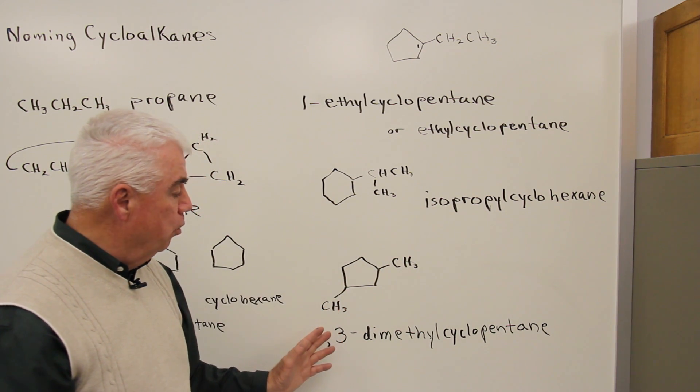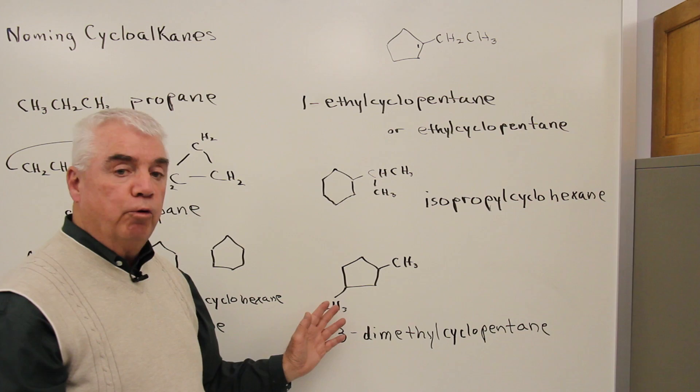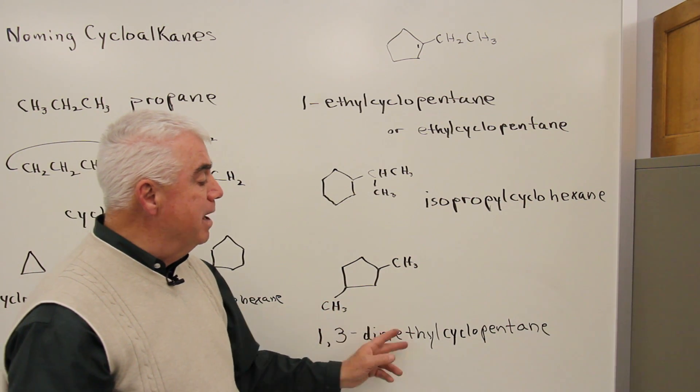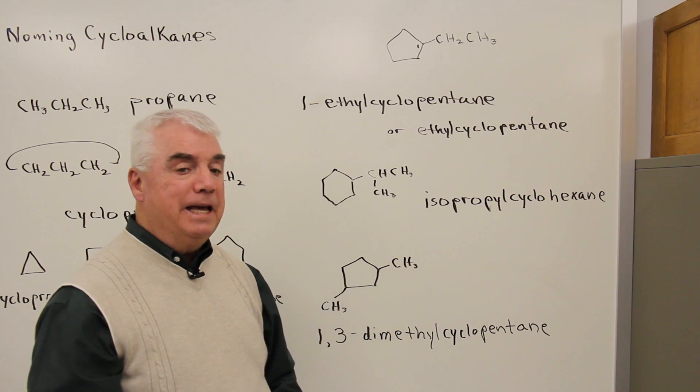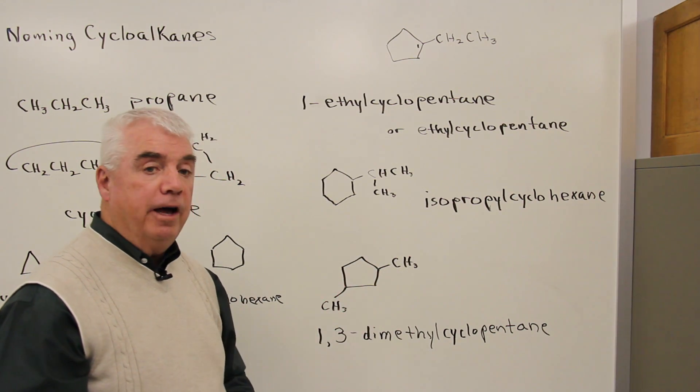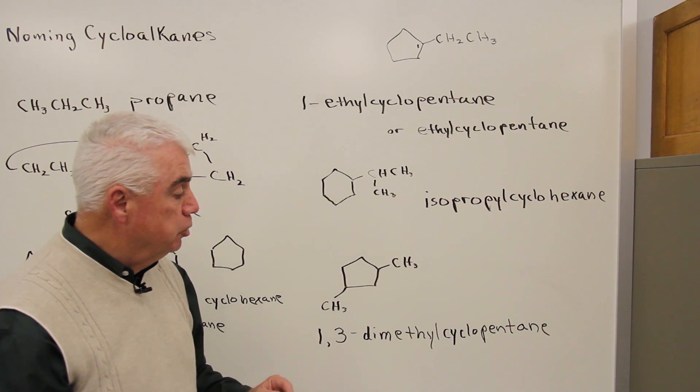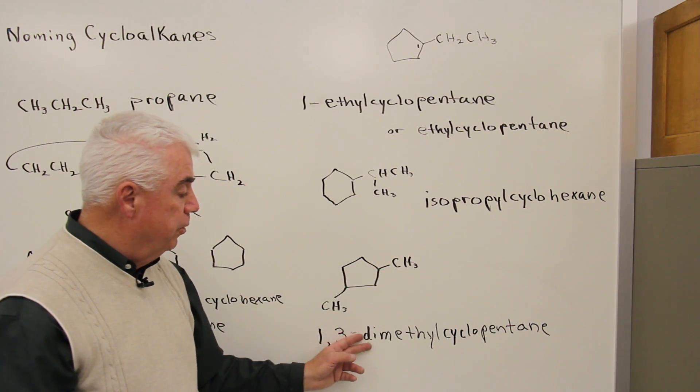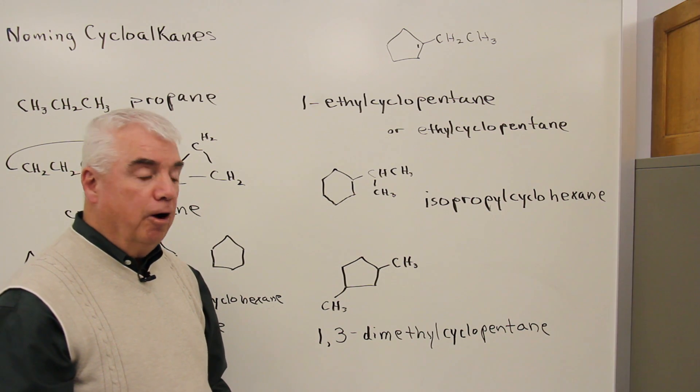Making things just a little more complex now, I've attached two groups to a ring. It's going to be a dimethyl cyclopentane. Base word has five carbons in it, base structure, so cyclopentane. And I've got two methyl groups, so that's where the dimethyl comes from.